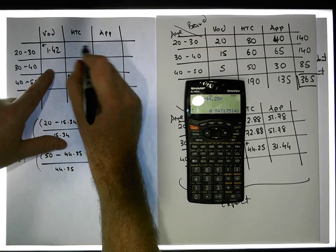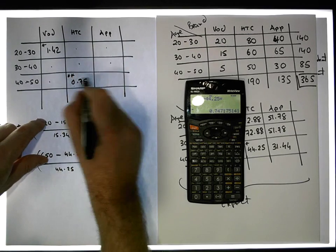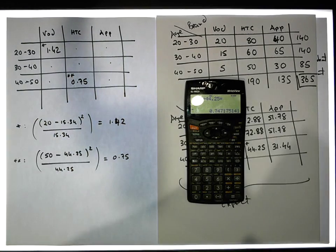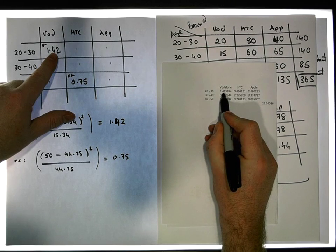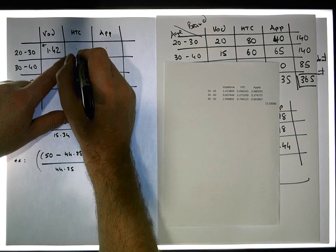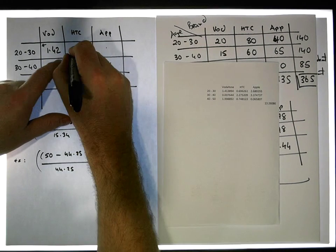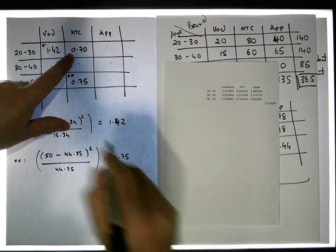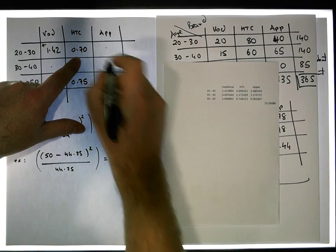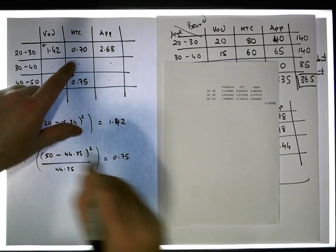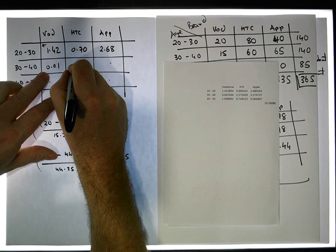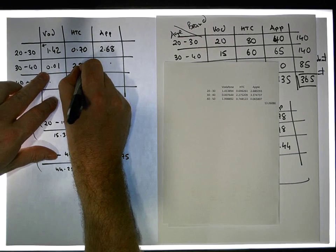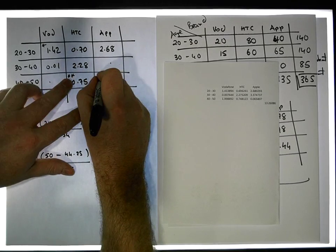I've done all of these calculations in Excel. So what we actually have is: 1.42 for the first cell — that's perfect; 0.69 which rounds to 0.70; 2.68; 0.01; 2.28; and 3.3-something for the remaining cells.